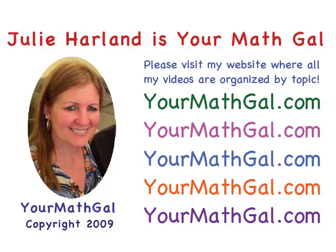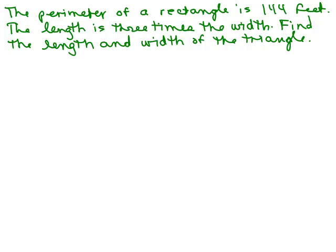Hi, this is Julie Harland and I'm your math gal. Please visit my website at yourmathgal.com where you could search for any of my videos organized by topic. Let's solve this geometry problem. The perimeter of a rectangle is 144 feet. The length is three times the width. Find the length and width of the triangle.